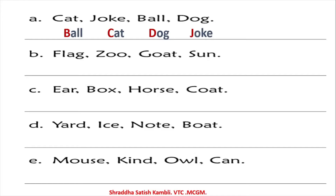Now look at the other lists. Try to pause the video and find the answers yourself, then check with mine. In list B, the first word is flag, then goat, then sun, and zoo — since Z is the last letter in the alphabet. So the order is flag, goat, sun, zoo. In list C, you have box first, then coat, then ear, and finally horse.